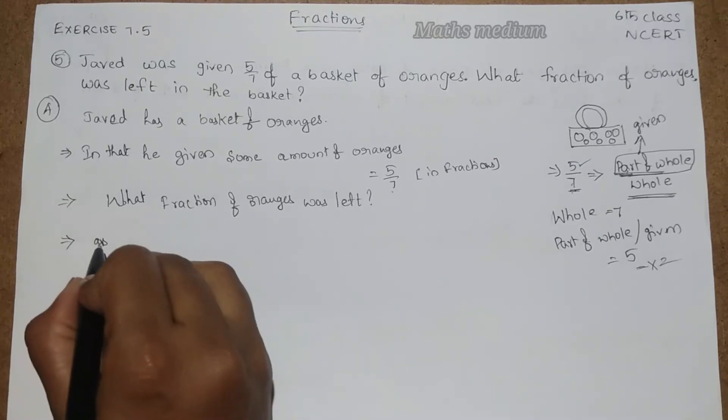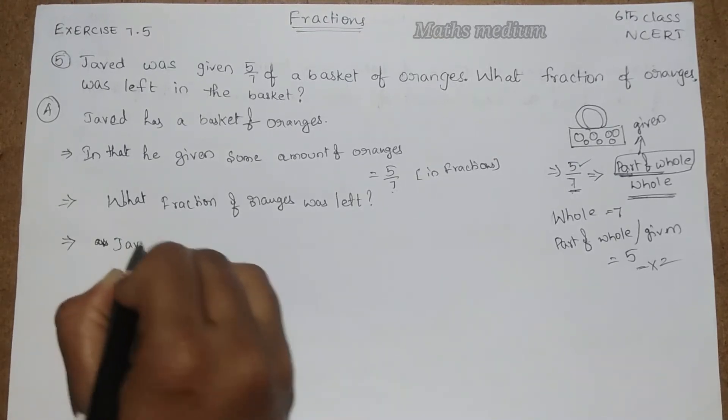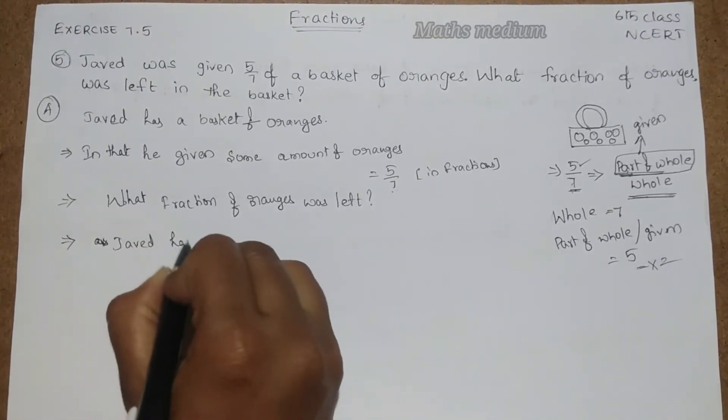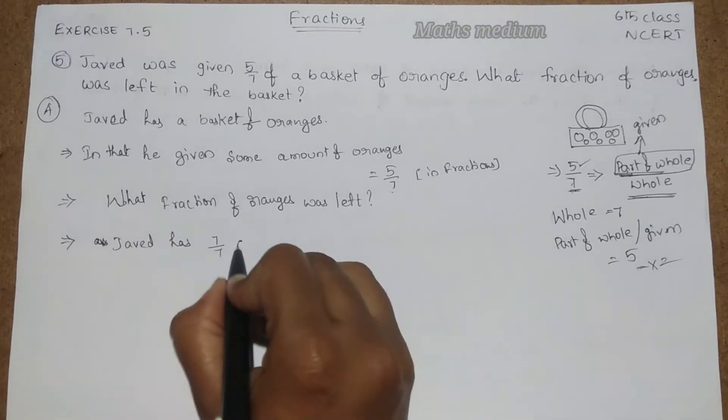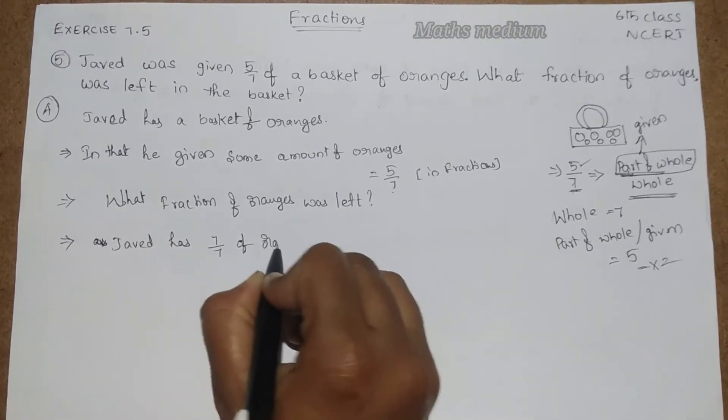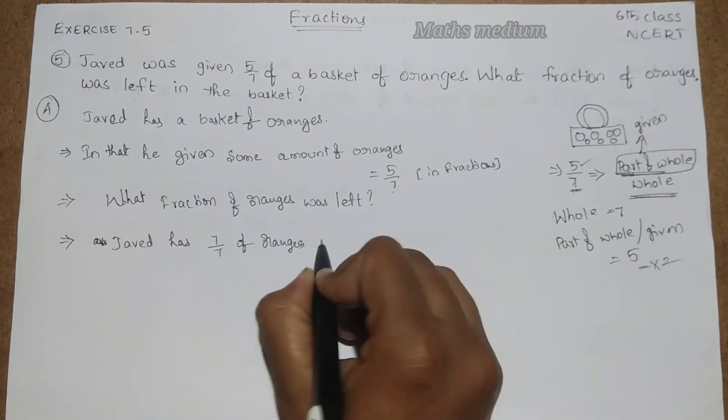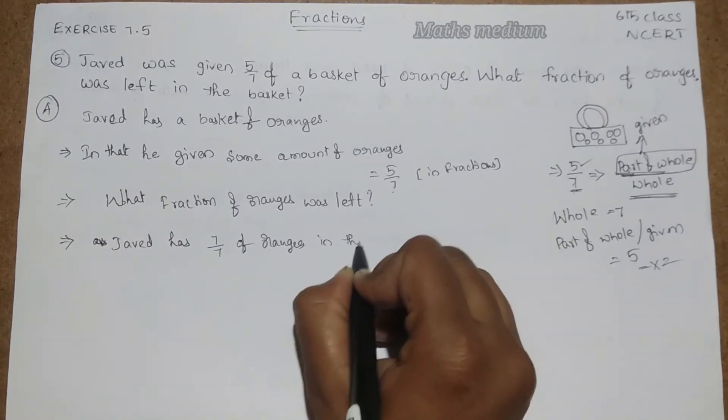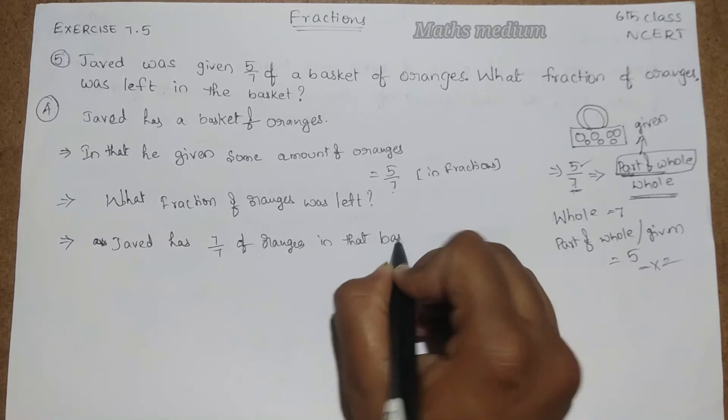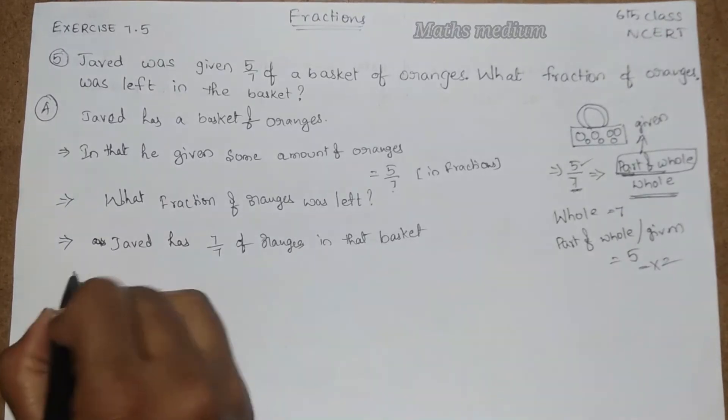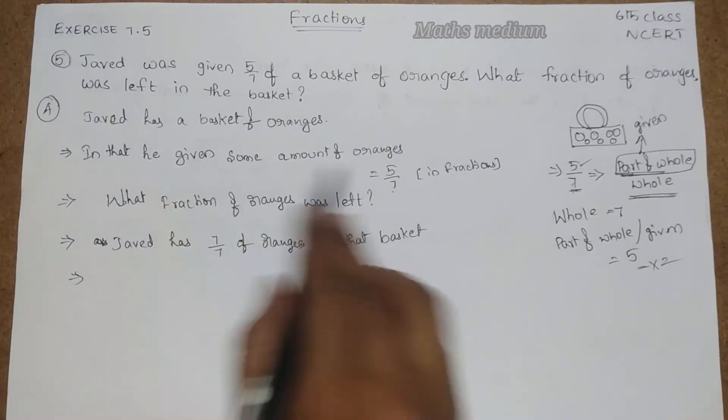We have to conclude that Javed has 7 by 7 of oranges in that basket, right? So in that, he gave 5 by 7.